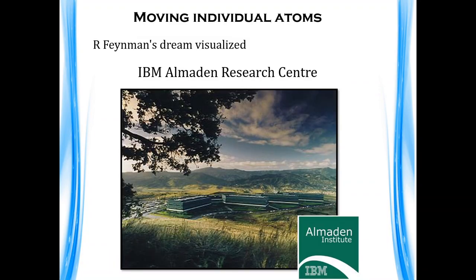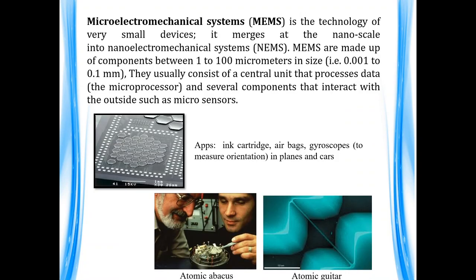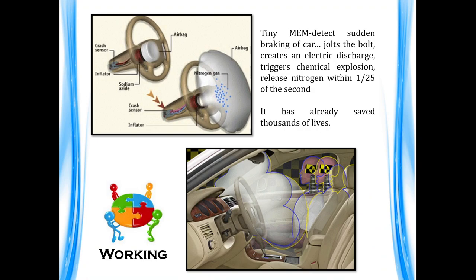Let me share some interesting developments from IBM's Almaden Research Center. Here we have made an atomic abacus. We also discuss MEMS — Micro Electro-Mechanical Systems — a technology of very small devices that emerges at the nano scale to form NEMS (Nano Electro-Mechanical Systems). MEMS are made up of components between 1 to 1000 micrometers in size, consisting of a central processing unit and components that interact with the outside world, such as micro-sensors. These find large applications in ink cartridges, airbags, and gyroscopes in planes and cars, detecting sudden braking to trigger a chemical explosion that fills airbags with nitrogen within 1/25th of a second, saving thousands of lives.